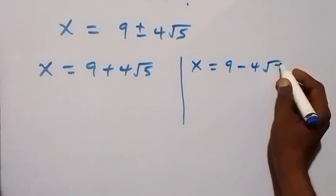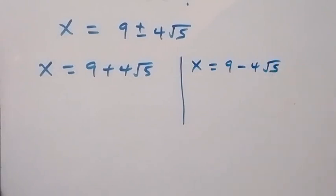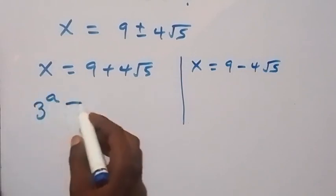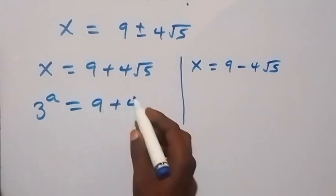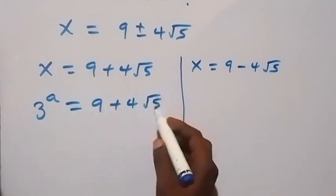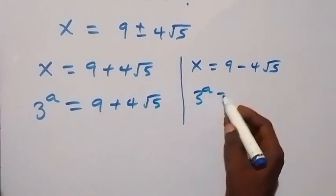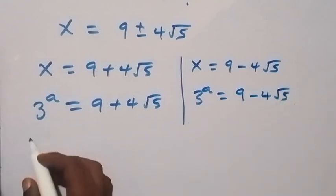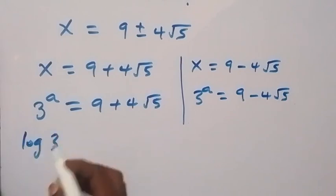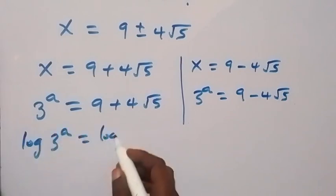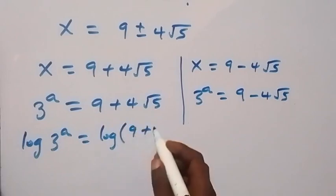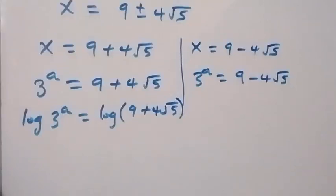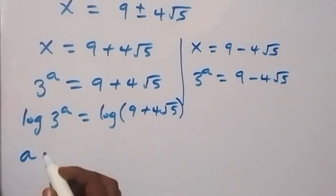Recalling that x equals 3 raised to power a, this means 3 raised to power a equals 9 plus 4 root 5, and also 3 raised to power a equals 9 minus 4 root 5. Taking the log on both sides of the first case: log of 3 raised to power a equals log of (9 plus 4 root 5). Applying the law of logarithms, the power a comes to the front: a times log 3 equals log of (9 plus 4 root 5).